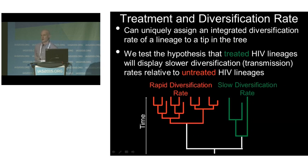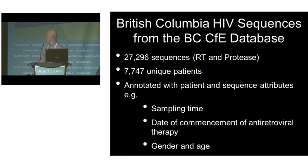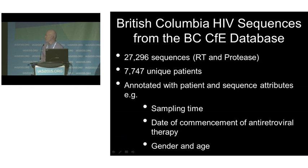To do this, we focused on the very well-sampled British Columbia epidemic and obtained sequences from the drug treatment program at the BC Center for Excellence — almost 30,000 sequences from almost 8,000 patients. These sequences are annotated with many attributes, including sampling time, the date people started taking therapy, and gender, age, and other attributes. We removed cases of transmitted drug resistance, defined as the presence of resistance mutations in pre-therapy samples. Treatment-experienced lineages were defined as sequences collected after initiation of antiretroviral therapy, and treatment-inexperienced as sequences collected before initiation.